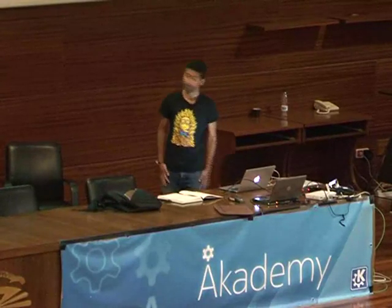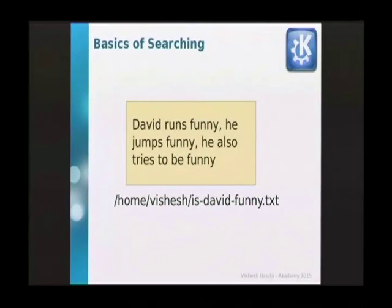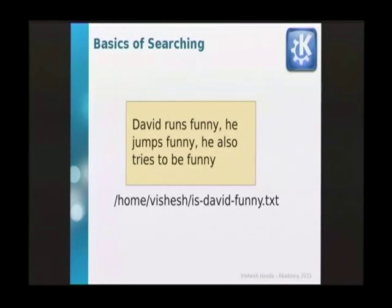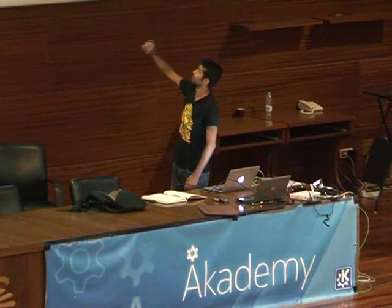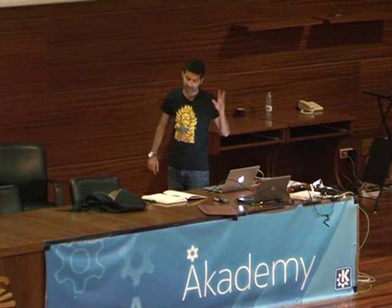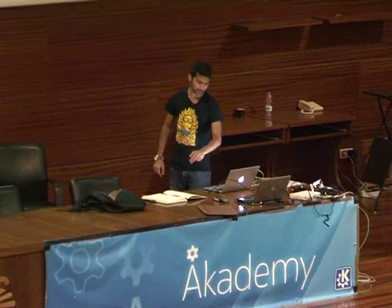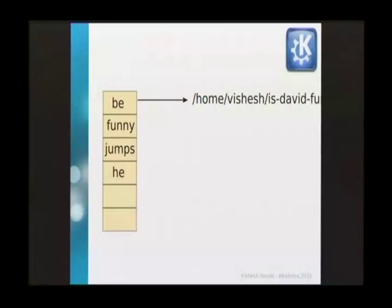So, basics of searching. Just to get you started in case any of you don't know: you have a file, it has some words — 'David runs funny, he jumps funny, he also tries to be funny' — it has a URL. You take the words, remove all the duplicates, remove the small punctuation marks and whatnot. You do a lot more stuff, but I'm simplifying it. And then you put it into a kind of a hash map.